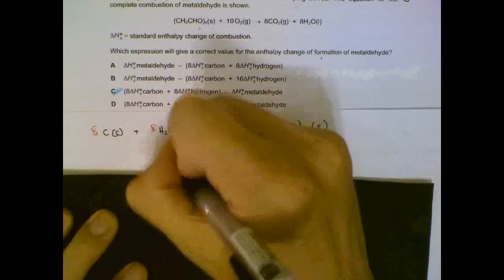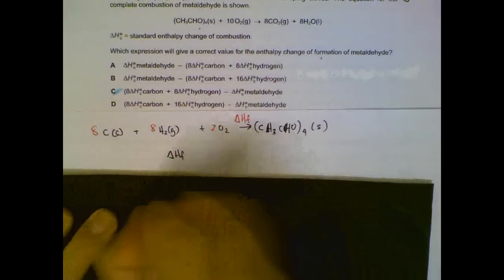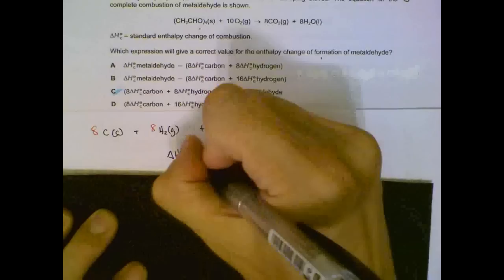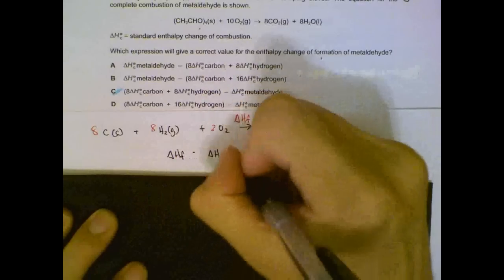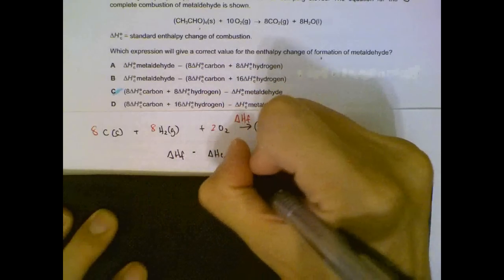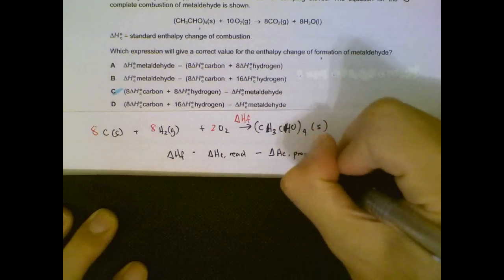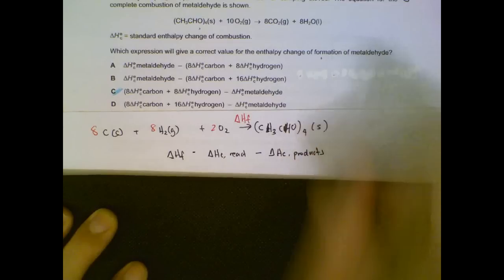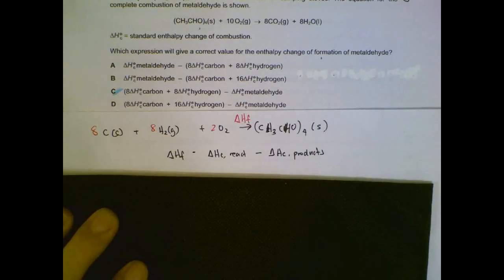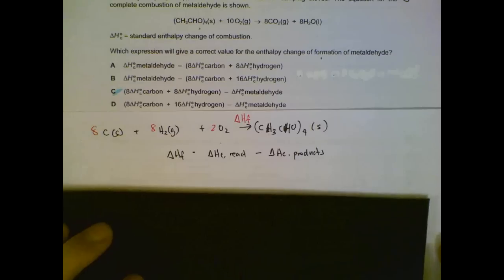One way we can remember is heat of formation or heat of this reaction is equal to heat of combustion of reactants minus heat of combustion of products. This is one general equation you can use. If you are given heat of combustion, how do we link it to the heat of reaction? Reactants. The sum of the reactants heat of combustion minus the sum of the products heat of combustion.